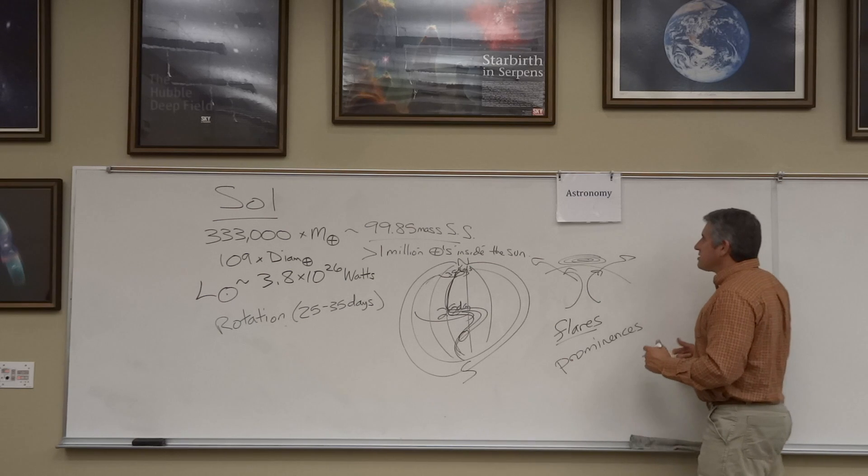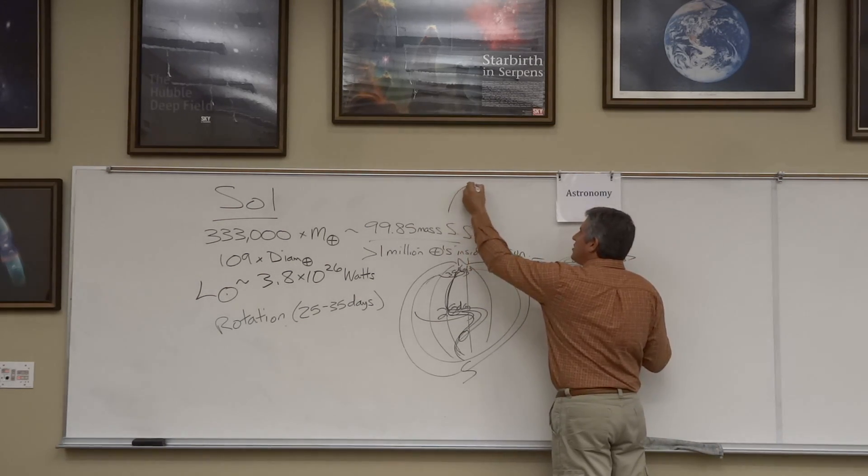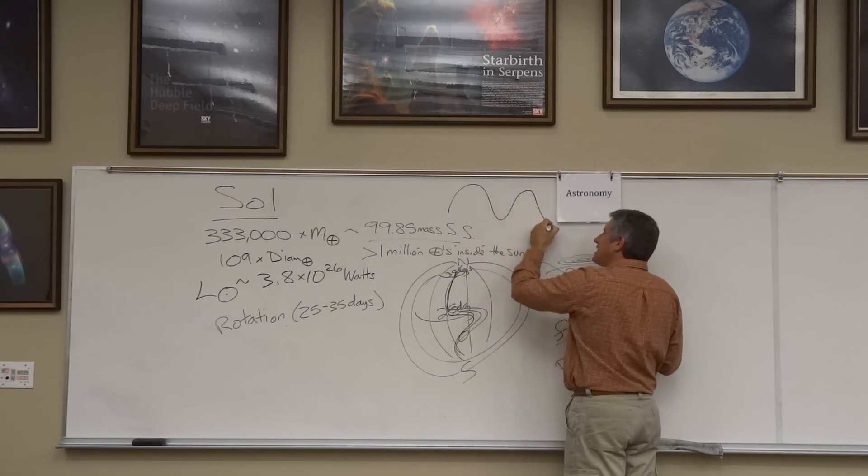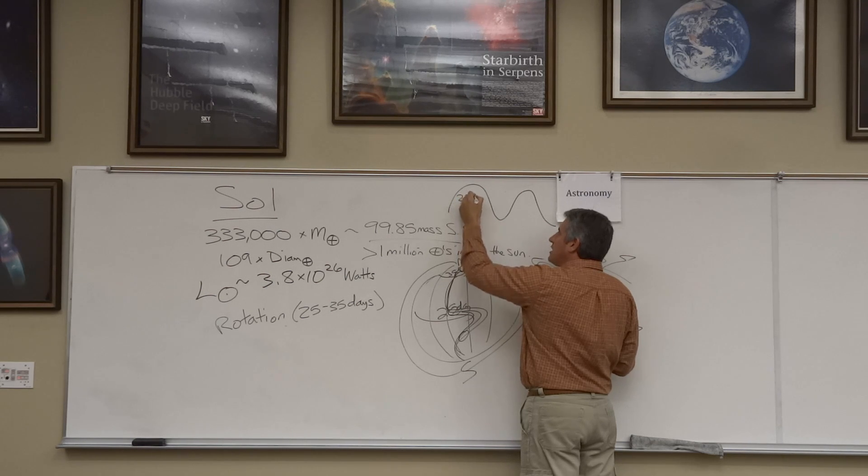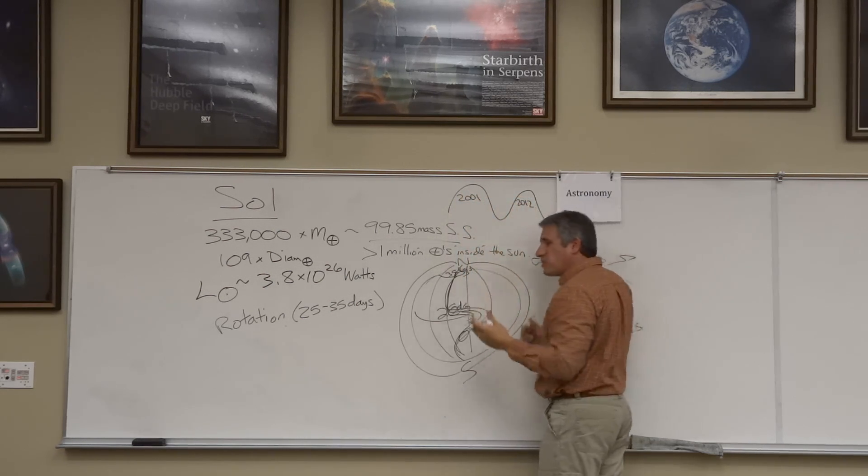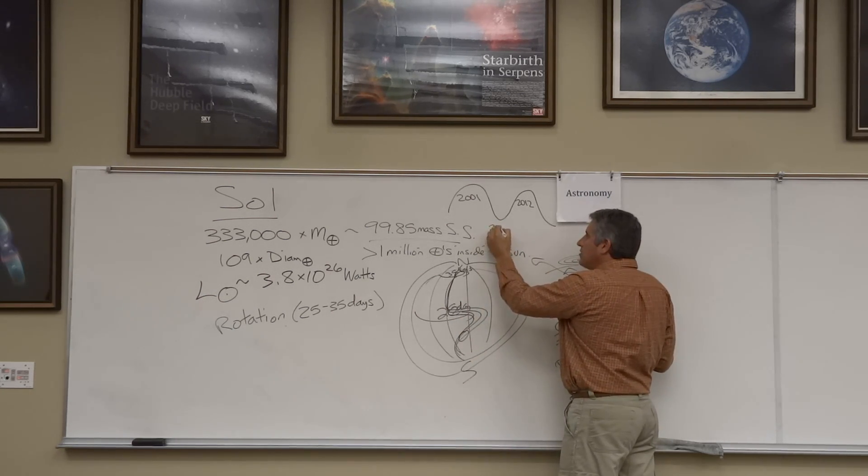In fact, there is a sunspot cycle on the Sun. Every 11 years, we get a solar maximum, and then things lull, and then they peak again. So we had a solar maximum in 2001, and we had another one in 2012. We'll have our next one in 2023. We had a solar minimum in 2008. We'll have another minimum in 2019.